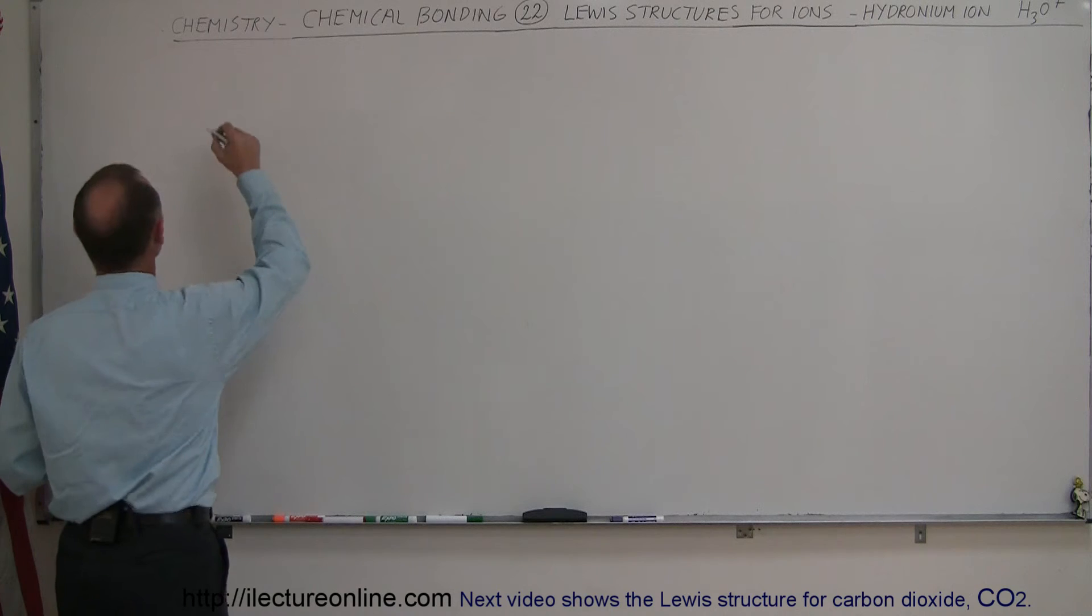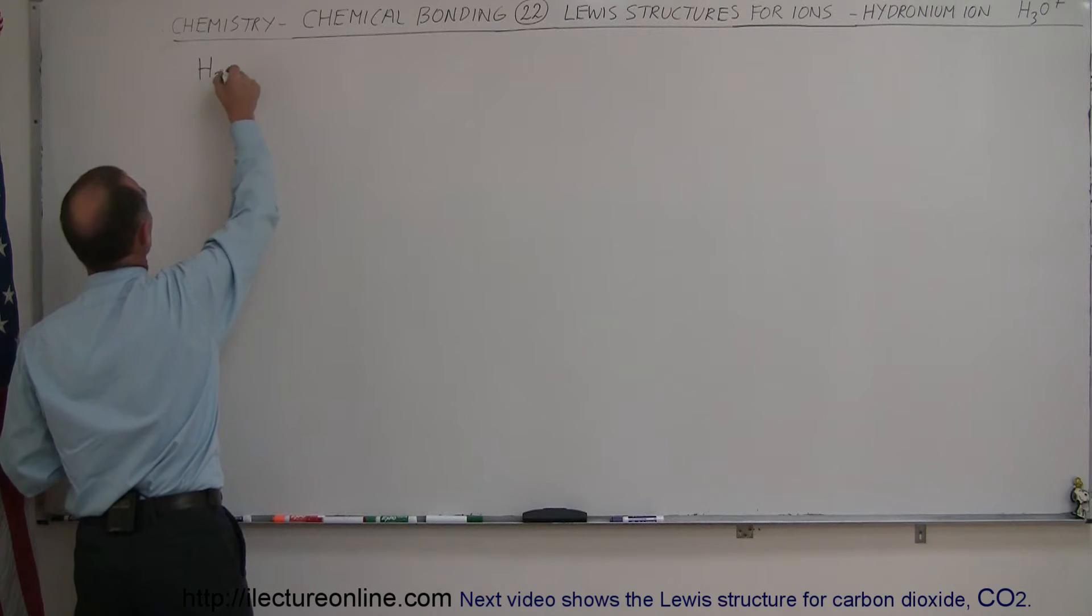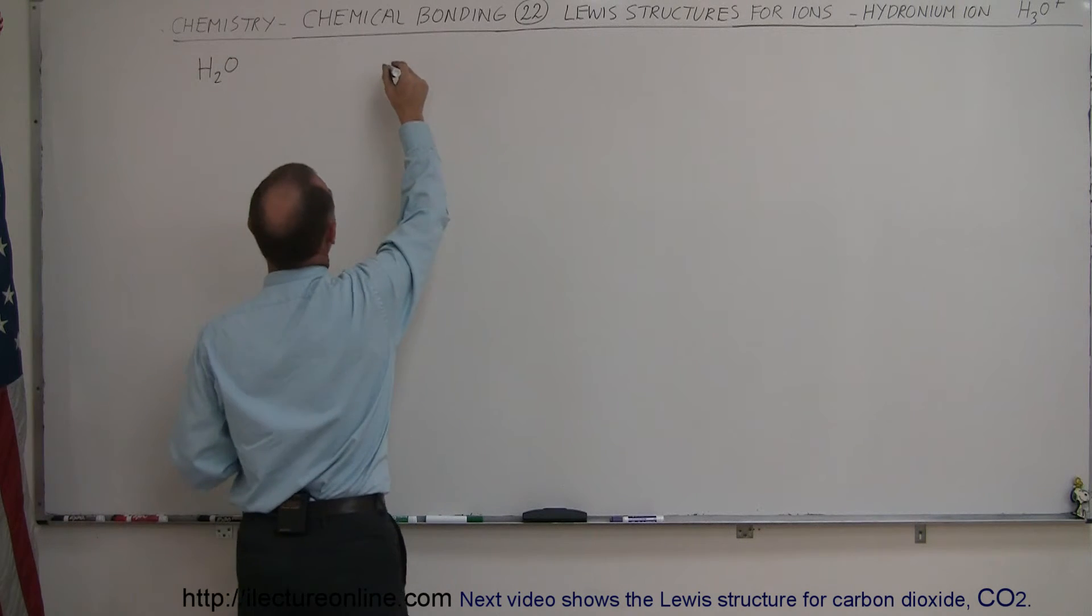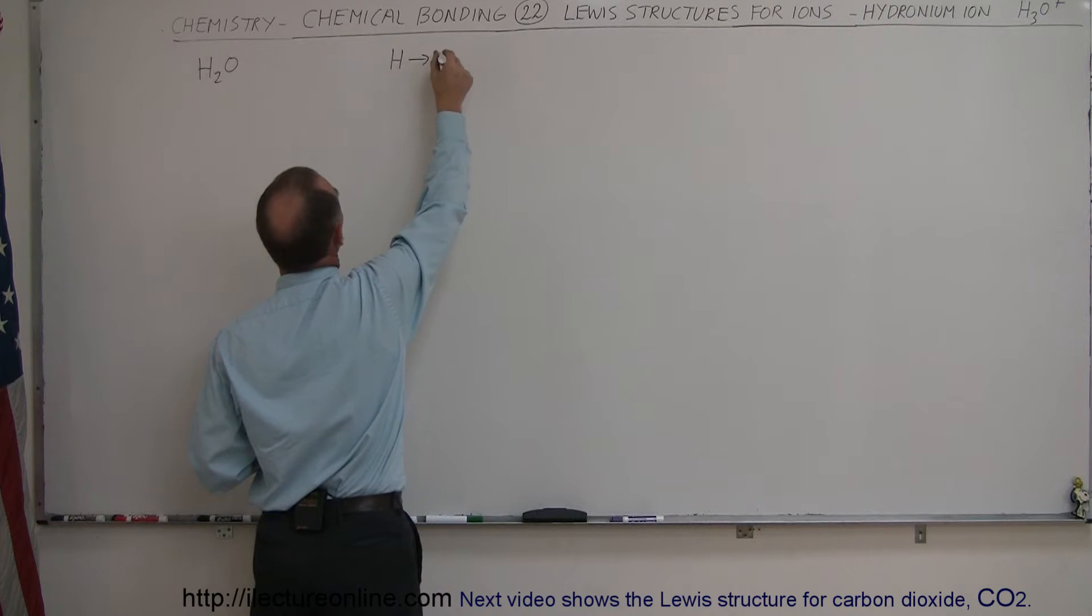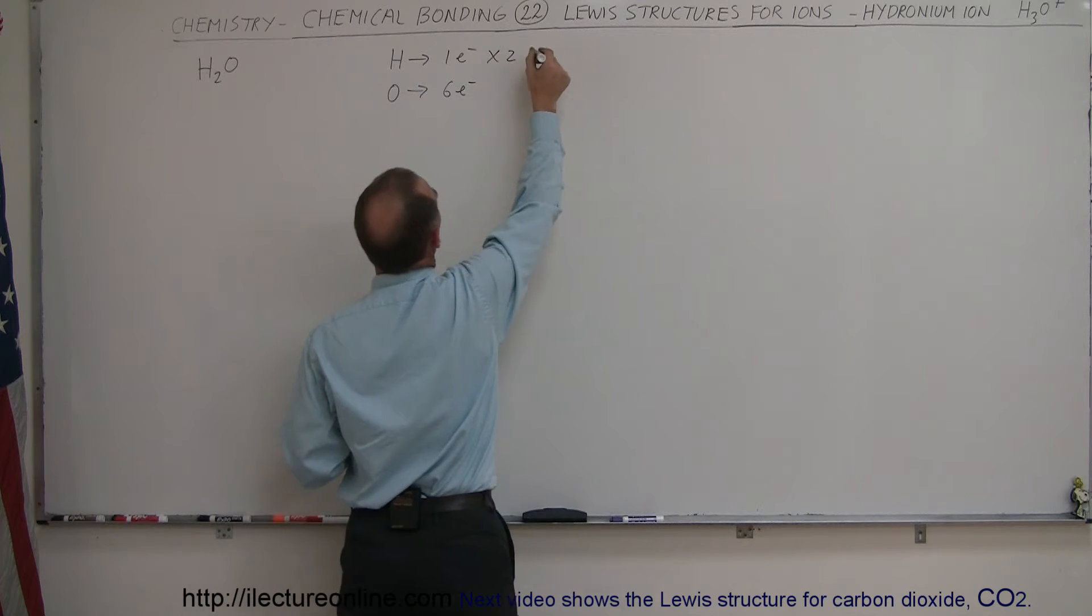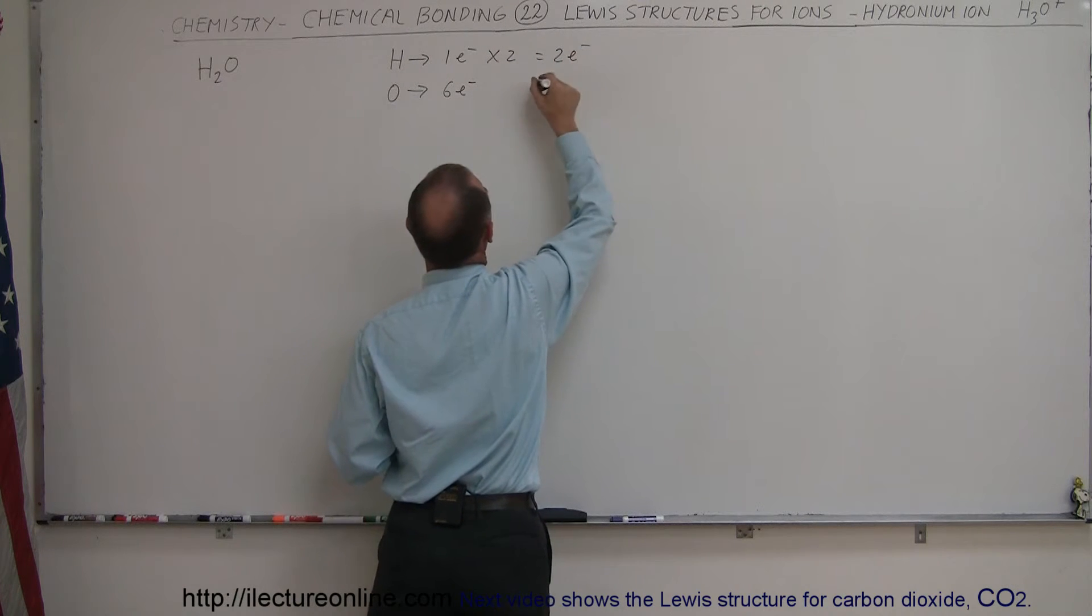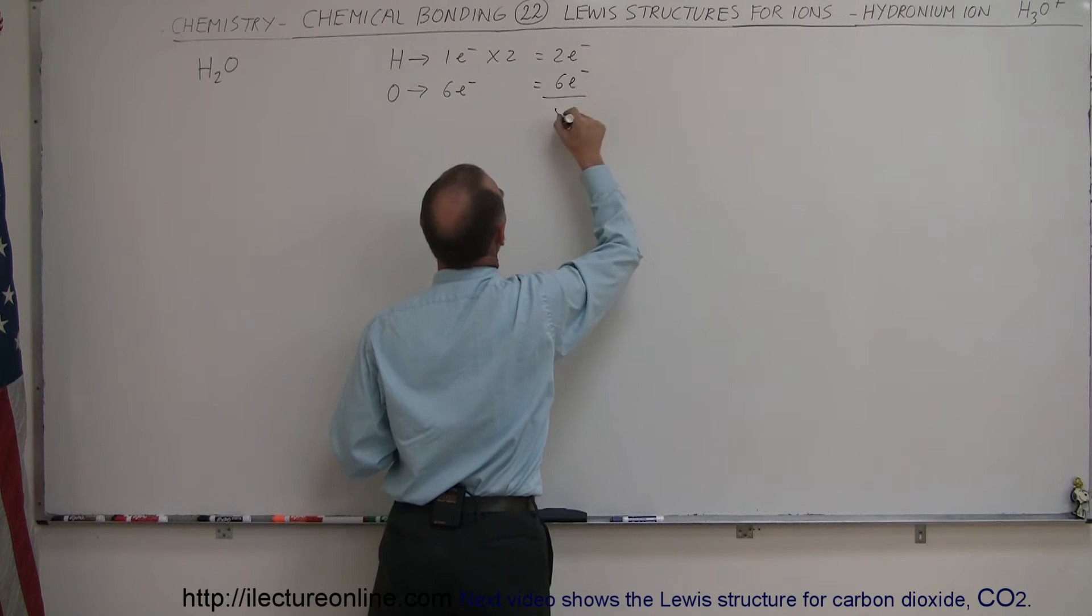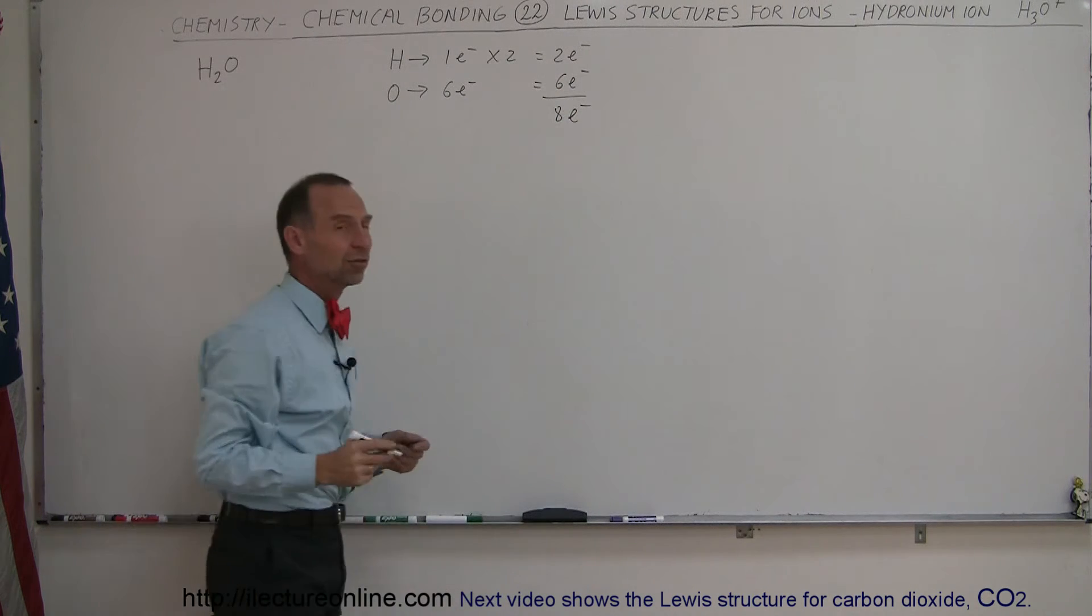So first of all, let's start out with H2O, simple water. We have hydrogen, which contains one valence electron, and oxygen, which contains six valence electrons. We have two hydrogens. That means we have two total valence electrons for the hydrogen, six for the oxygen, to give us a total of eight valence electrons.